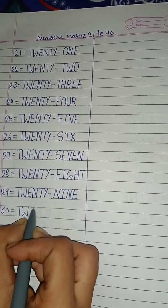37 — T H I R T Y, 30; S E V E N, 7. 37. 38 — T H I R T Y, 30; E I G H T, 8. 38.